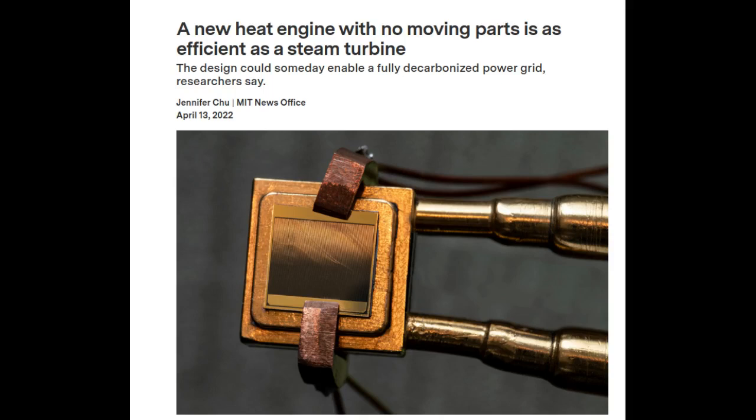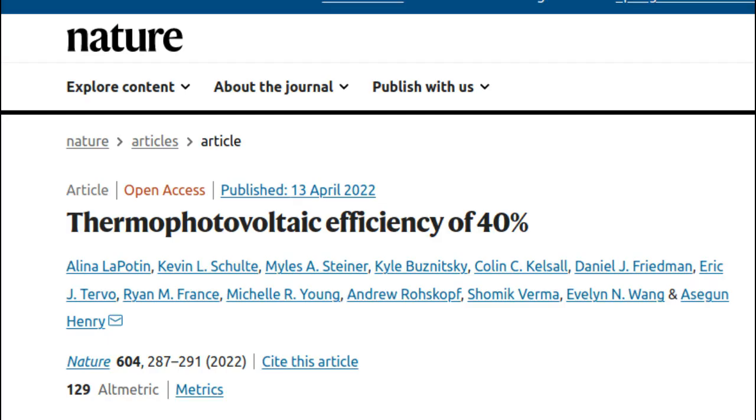Engineers at MIT and the National Renewable Energy Laboratory have designed a heat engine with no moving parts. Their new demonstrations show that it converts heat to electricity with over 40 percent efficiency, a performance better than that of traditional steam turbines.